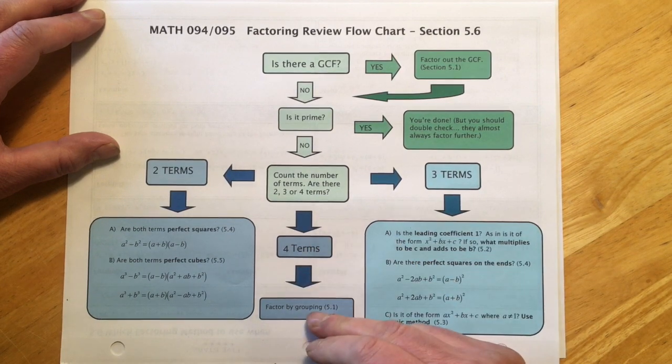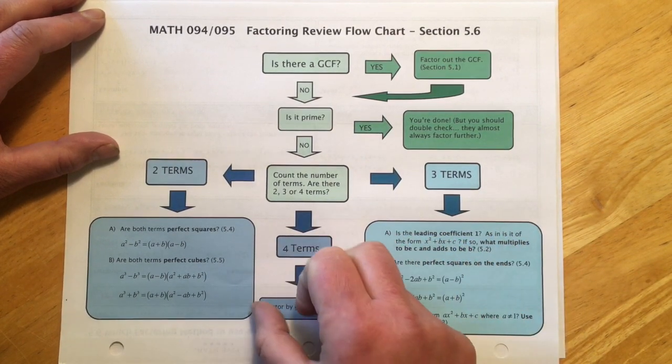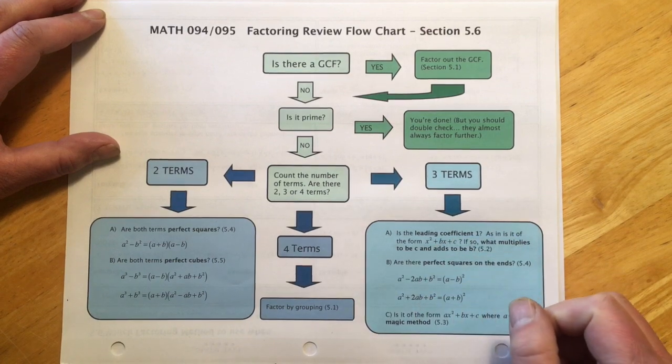Four terms is the easy one to spot. There's only one choice. That's our factor by grouping that we saw in section 5.1.